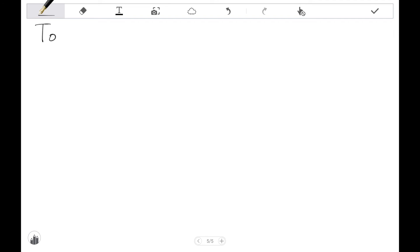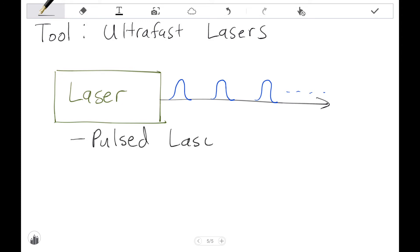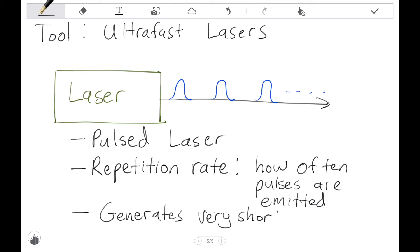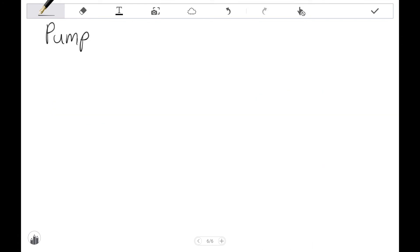Ultra-fast lasers are one of the main tools used in pump-probe spectroscopy. Instead of shooting a steady stream of light, these lasers actually emit pulses of light. The repetition rate is one important feature of these lasers as it reveals how often a pulse is generated. Finally, it is worthwhile to note that the time duration of each pulse can be very short, typically on the order of femtosecond durations for these lasers.